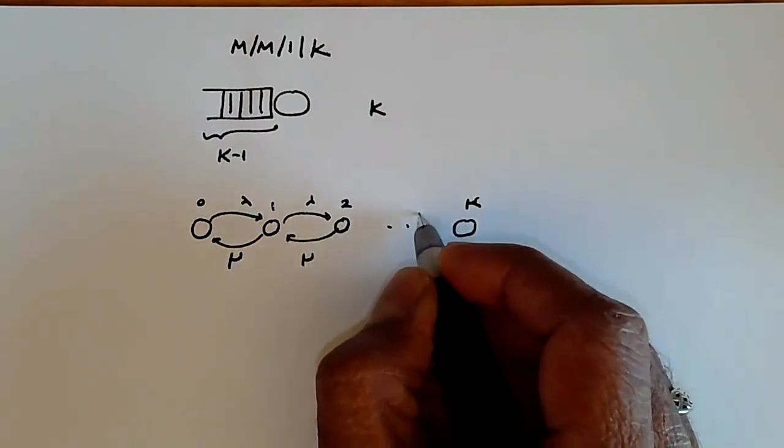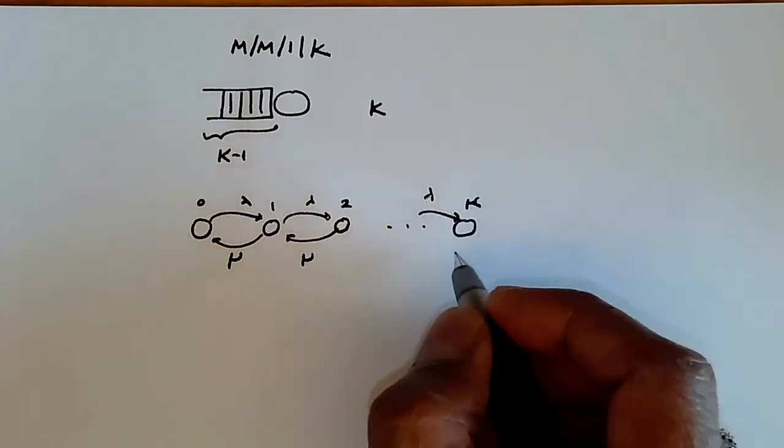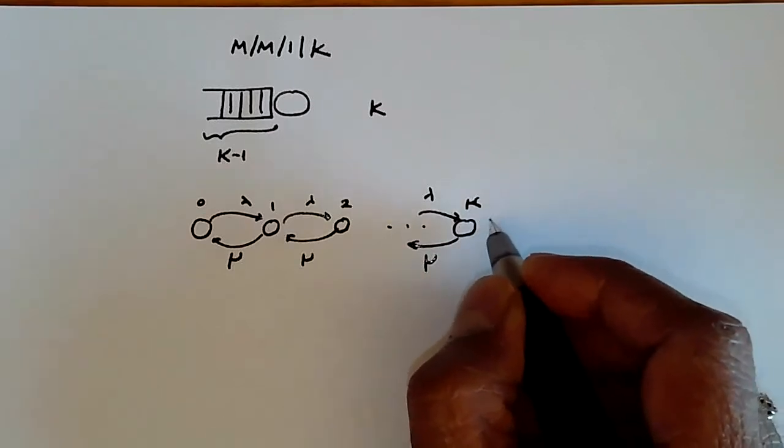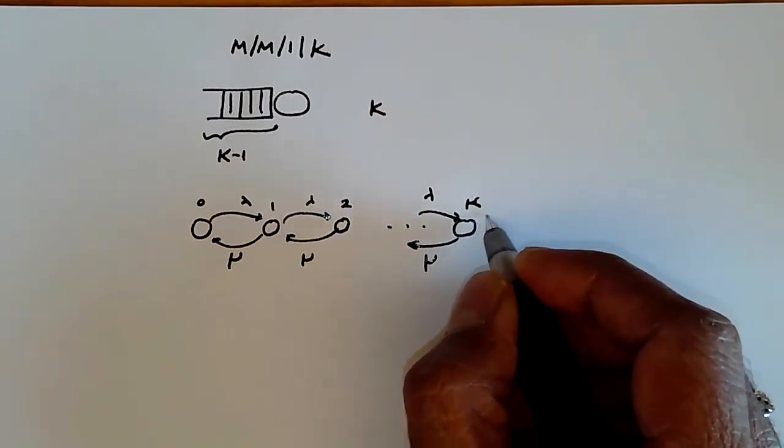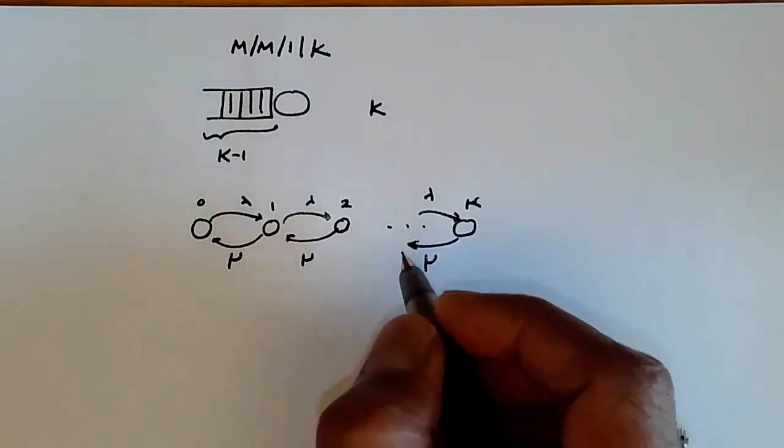And then we have arrival into lambda of rate of k, but the service rate is mu, but we have no arrivals beyond at this state. So at this state, we don't have an exit arc going in that direction. We only have exit going in this direction.